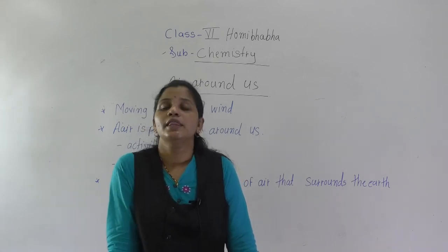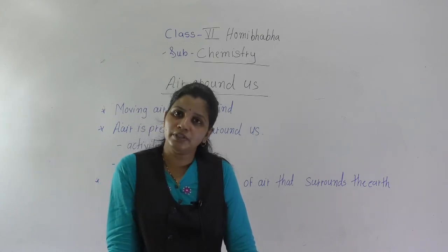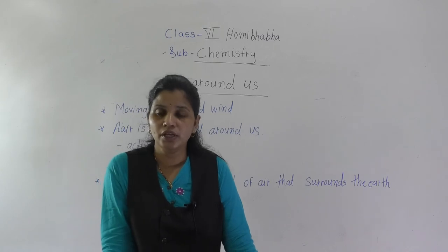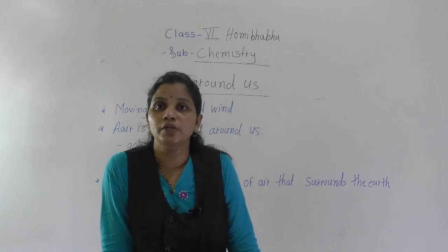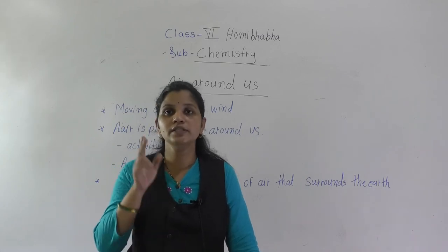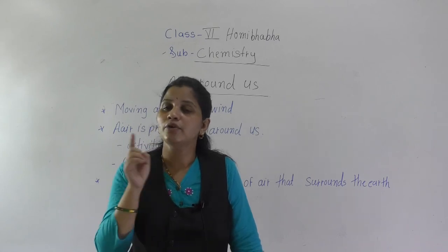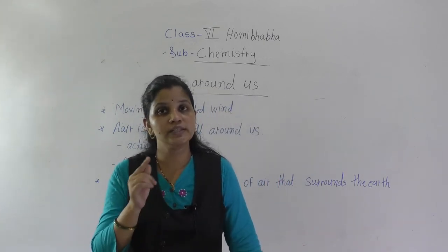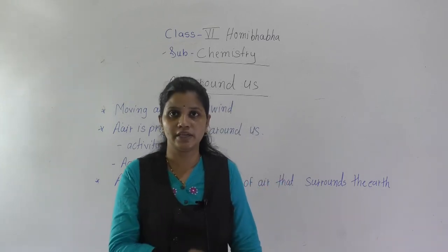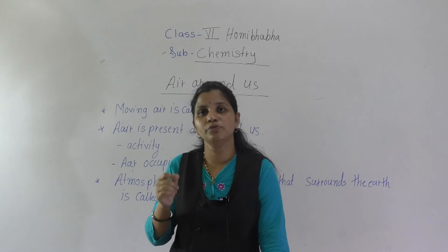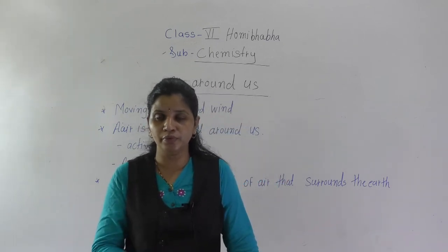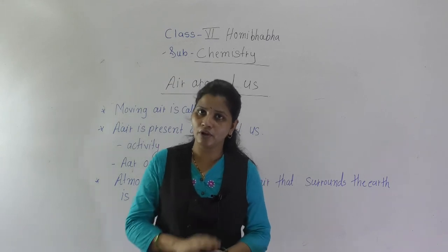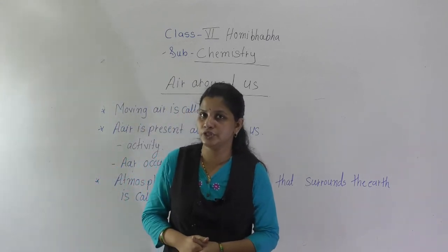The next point is the composition of air — how many percentage of oxygen, nitrogen, and all — we are going to learn in the next lecture. So today what you have to do: first, read this lesson; second, do both the activities at home; write observations in your chemistry notebook; and draw the diagram of layers of atmosphere from your fifth standard CBSE textbook. When you complete all this work, inform me. So today we will stop here. Tomorrow we will see the next point, that is the composition of air. Thank you.